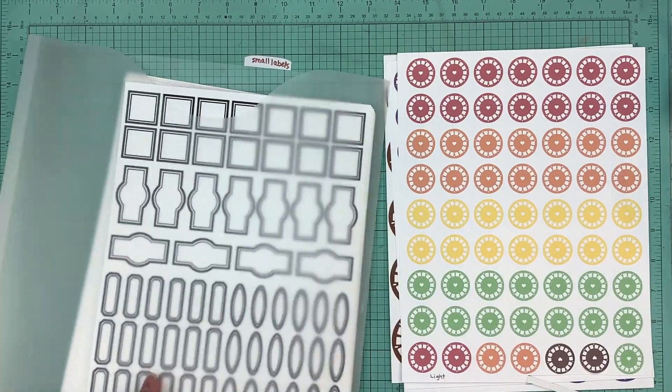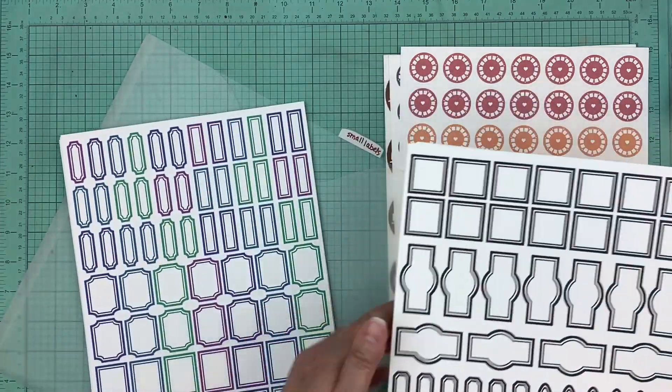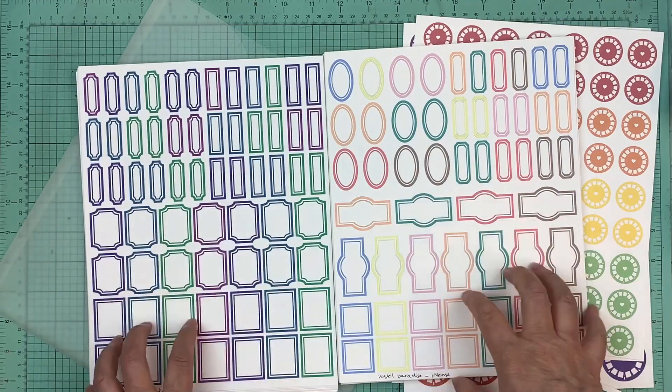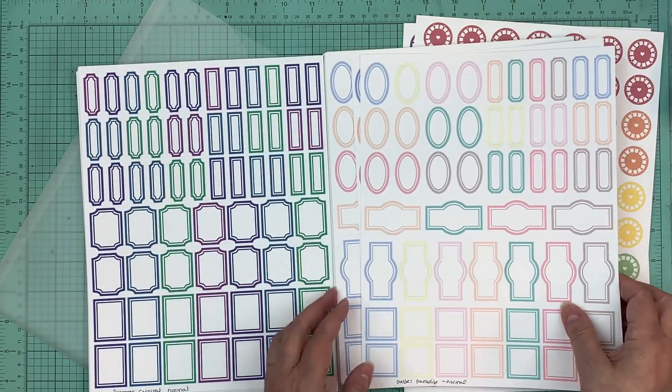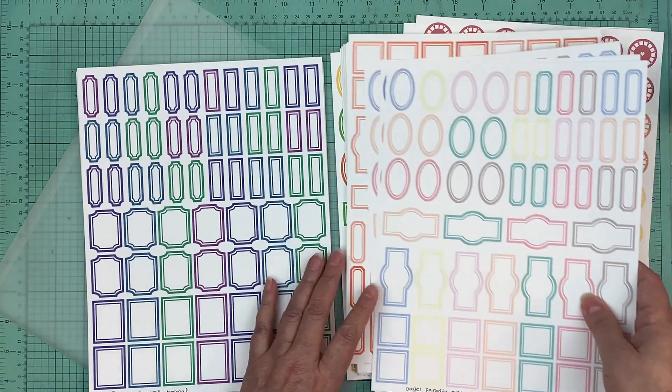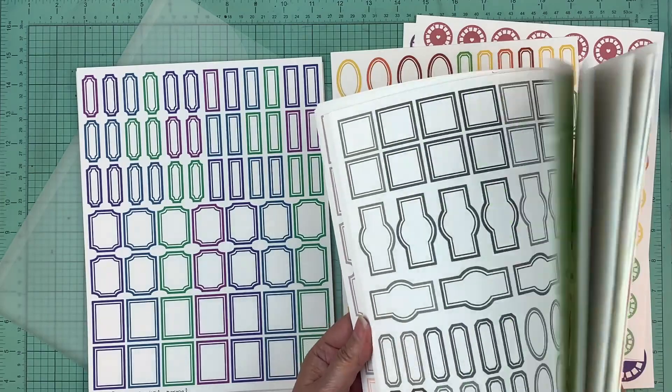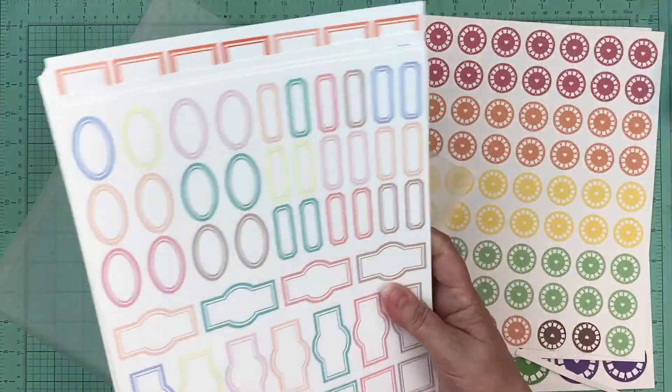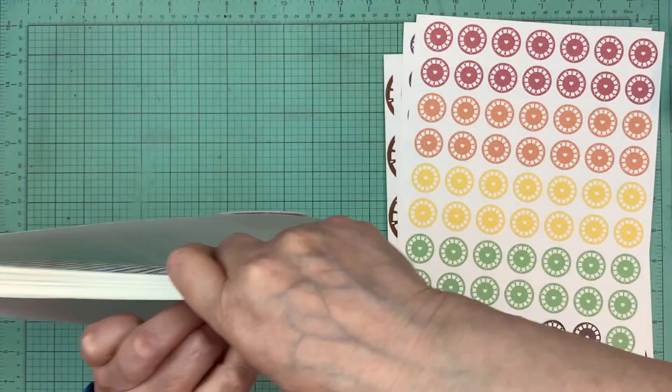So again, these were released last week. So we have two different shapes of the smaller labels. So we have small labels one and small label two. So again, it comes in all the different colors, the assorted packs and then the single colors. So you have labels one and two, and again they're back to back so that it's easier for me to find them.